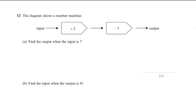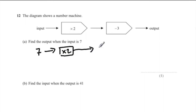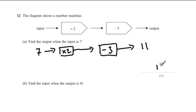Question 12A: the number machine takes an input, multiplies by 2, then subtracts 3, giving an output. Find the output when the input is 7. So 7 multiplied by 2 equals 14, then 14 minus 3 equals 11. Our final answer is 11.